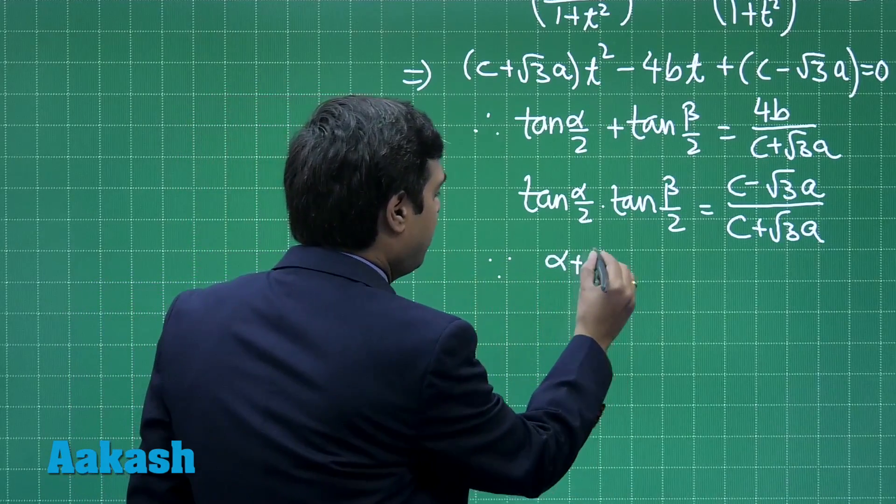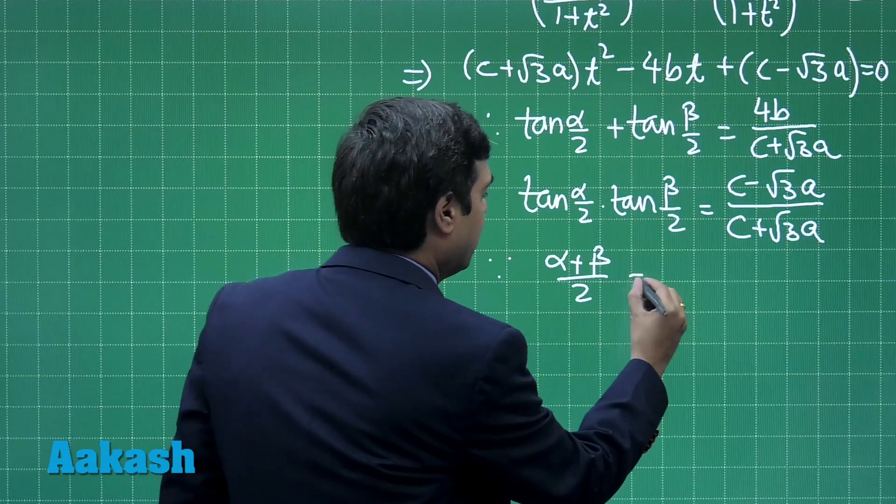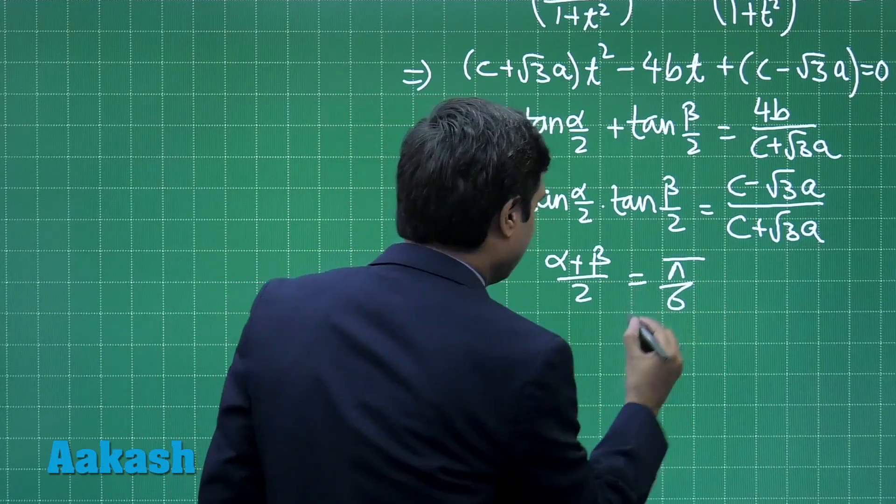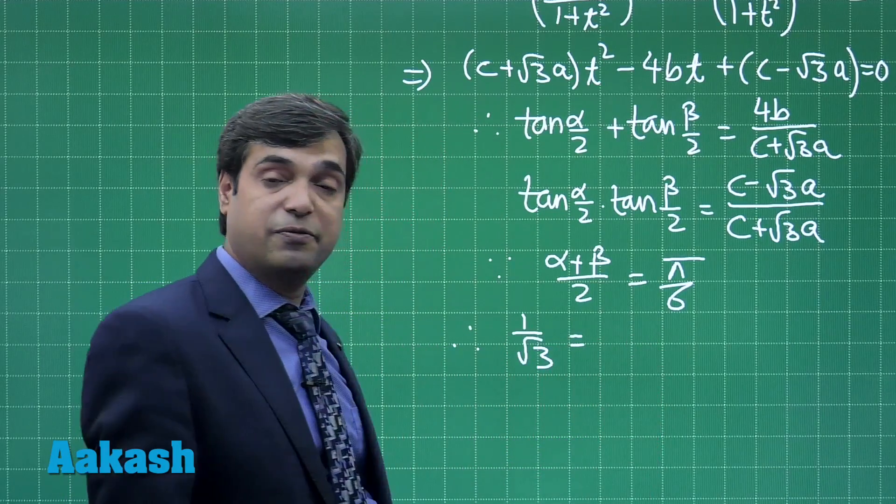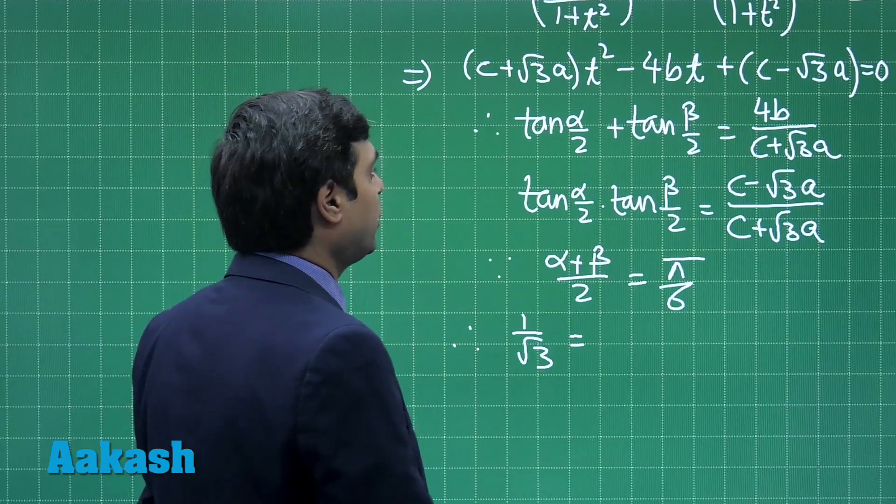Since α + β = π/3, then (α + β)/2 = π/6. Therefore, taking tan on both sides, tan(π/6) which is 1/√3 equals